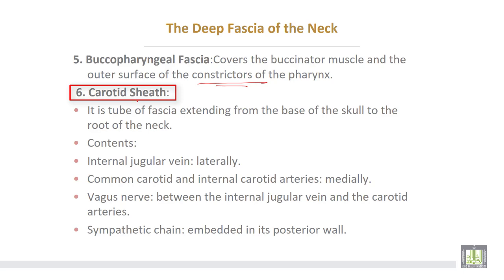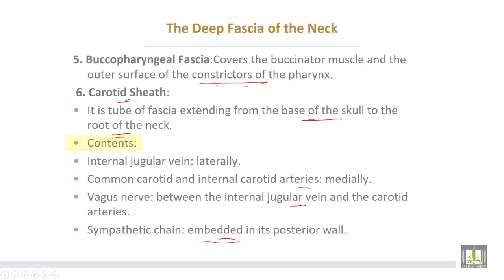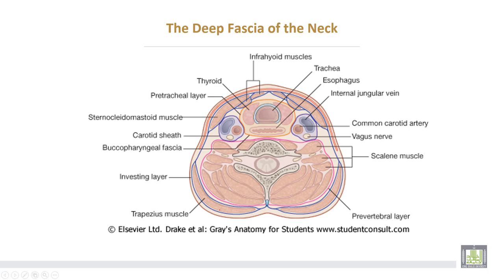The sixth layer is the carotid sheath, a tube of fascia extending from the base of the skull to the root of the neck. Its contents include: the internal jugular vein laterally, the common carotid and internal carotid arteries medially, the vagus nerve between the internal jugular vein and carotid arteries, and the sympathetic chain embedded in the posterior wall of the carotid sheath. A transverse section of the neck demonstrates the general investing layer, pre-tracheal fascia, pre-vertebral fascia, and carotid sheath.